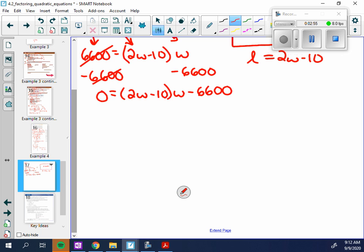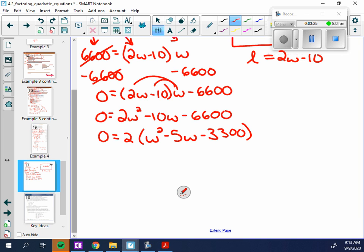So what we're going to be looking at here is we do have to distribute this. And I'm just going to distribute this backwards. It doesn't really matter. I would get 2w squared minus 10w minus 6,600. And now it looks much better for me to factor. So my greatest common factor here is 2. So I'm going to factor out a 2. And I would have w squared minus 5w minus 3,300.